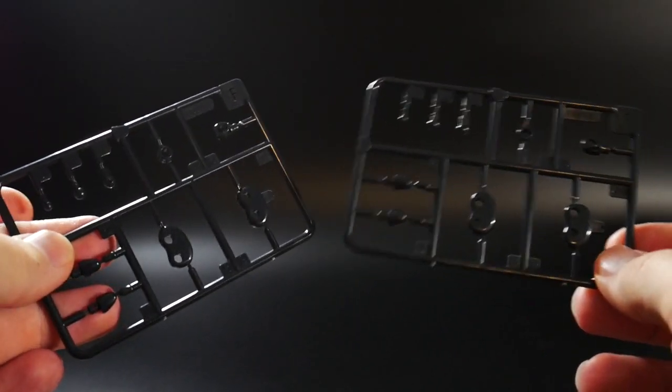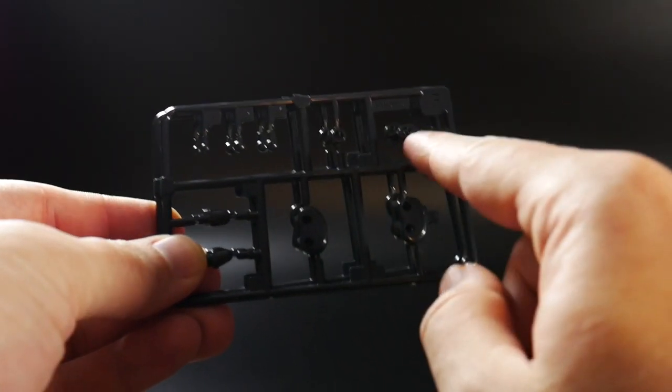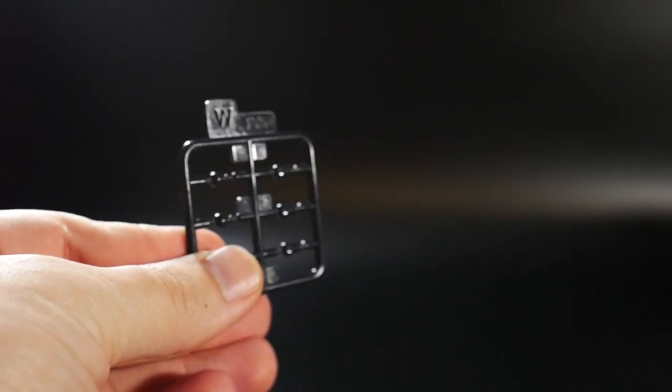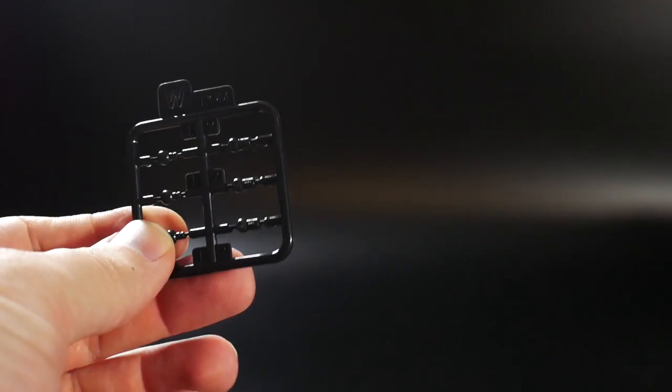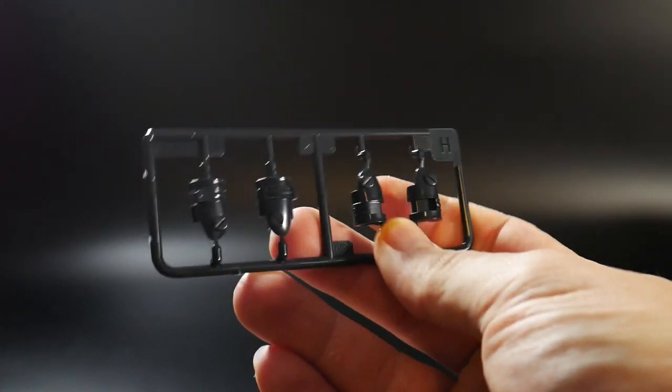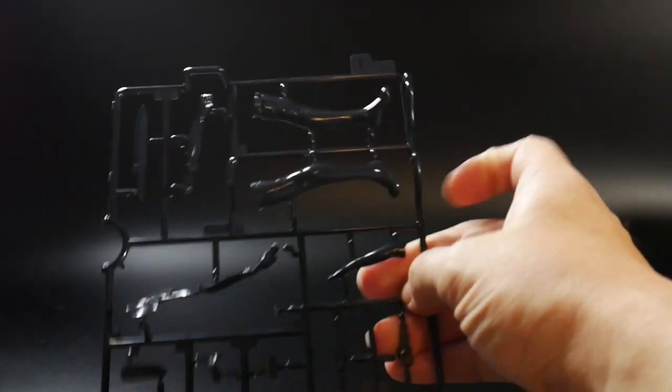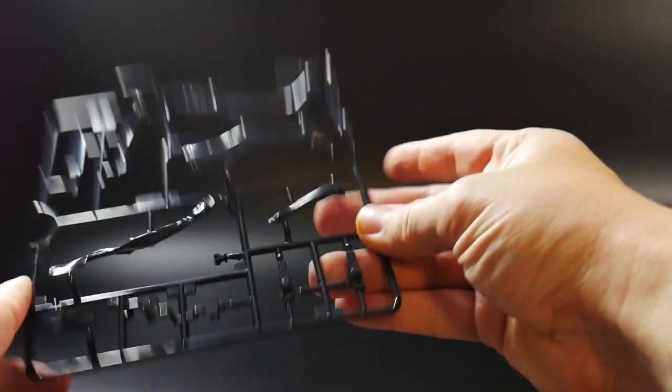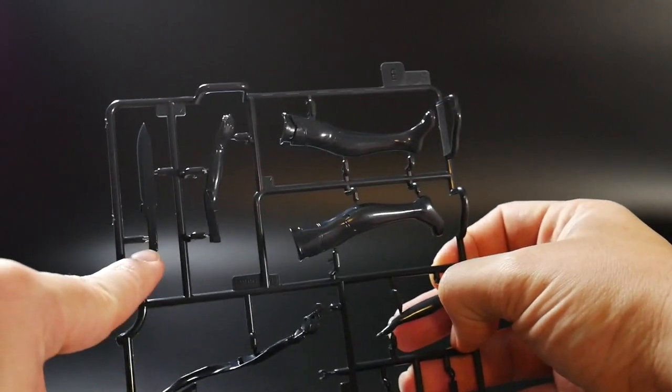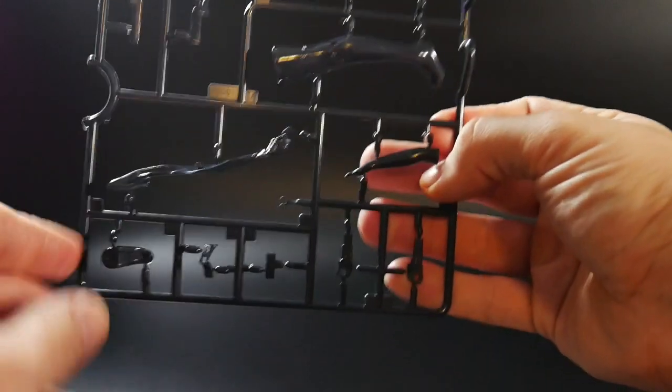Moving on to the black runners, you're going to get two F runners. These are pretty much your joints for the legs as well as polycaps. These are parts for the arms as well. You have a small runner W for more little polycaps, obviously for the wrist. Runner H which is parts for the legs. And runner E, these are more very glossy black parts which is going to be for the stocking.